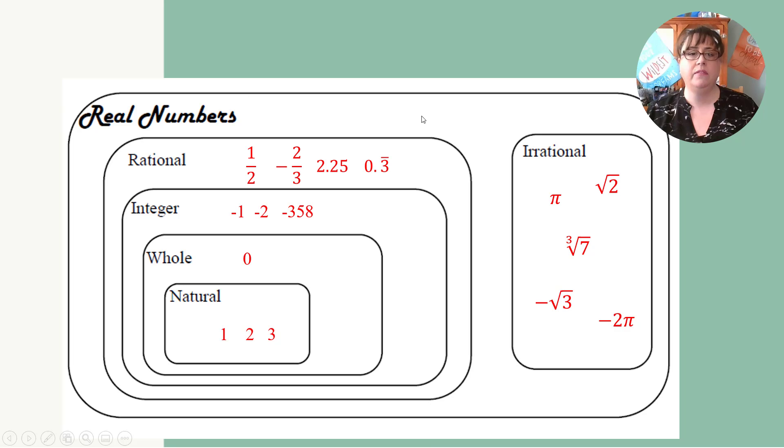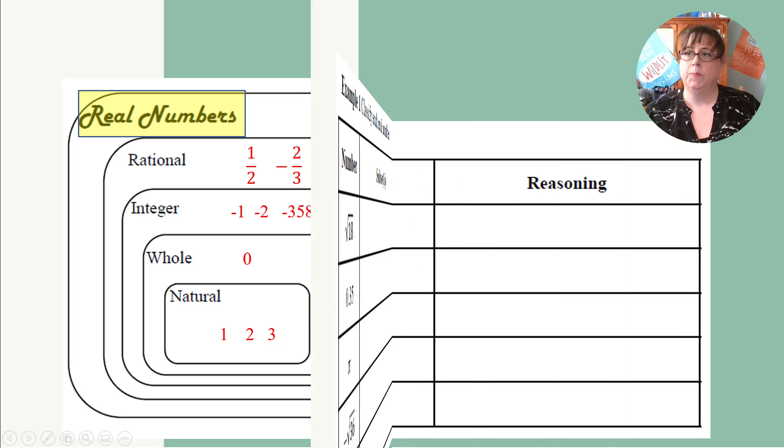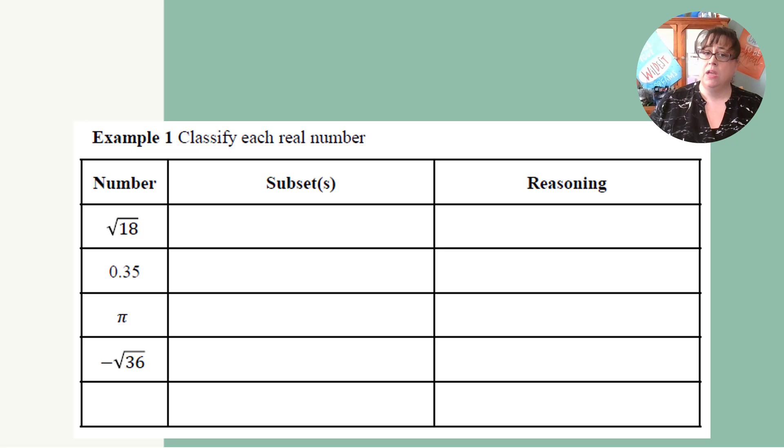And then all of these are real numbers. So now let's look at example number one. Classify each number. The square root of 18. So when I go back to what this is, I can't take the square root of 18. So since I cannot do anything to it, it is an irrational number. Why? It's not a perfect square. Since it's not a perfect square, I can't do anything to it. It's irrational.